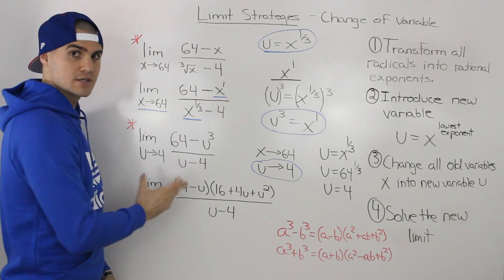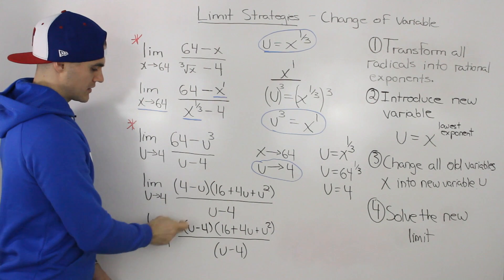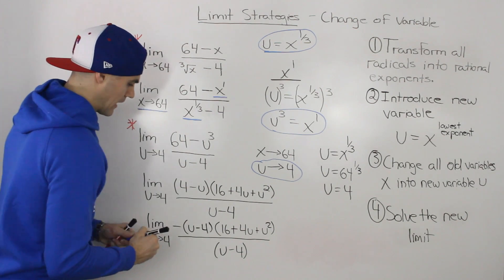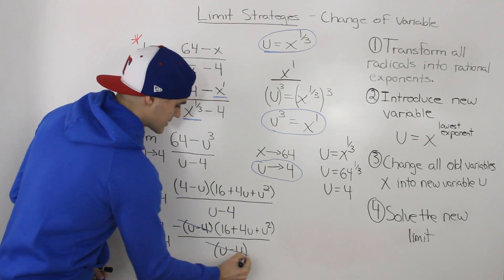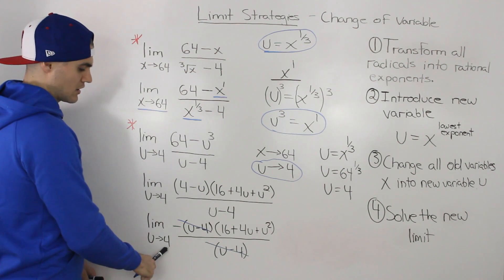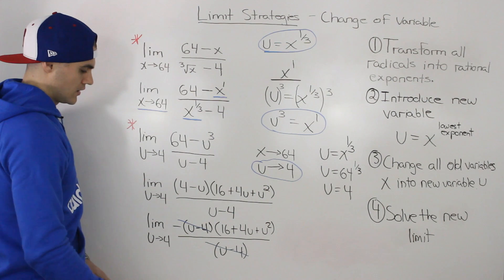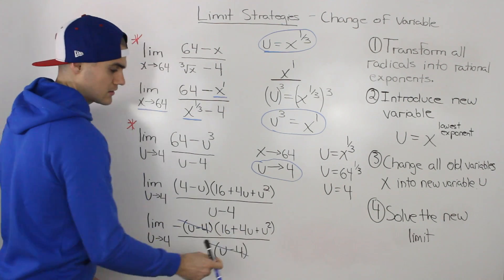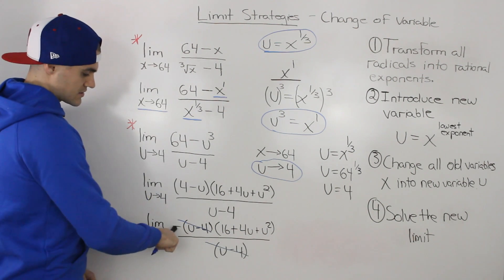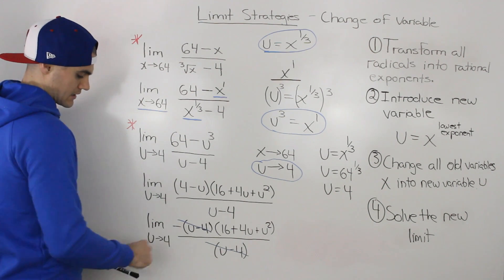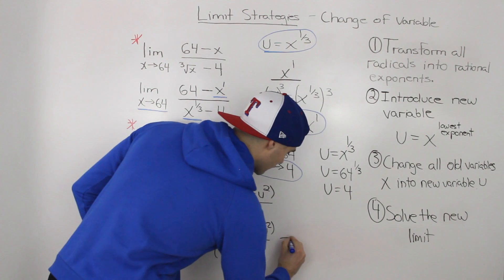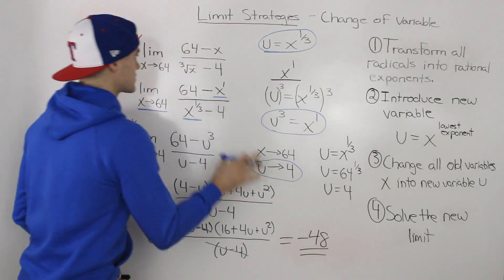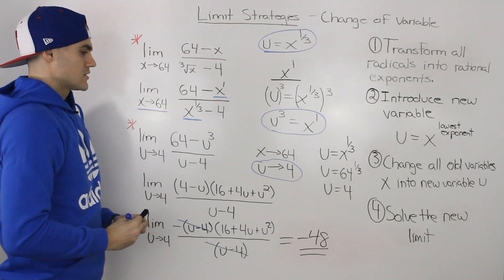We need to cancel the (u minus 4) in the denominator. The factored numerator contains (4 minus u), which isn't quite the same, but factoring out a negative gives us negative (u minus 4). The (u minus 4) terms cancel, and we can now substitute u = 4 directly. Substituting into the remaining bracket gives 16 + 16 + 16 = 48, but with the negative out front, our final answer is negative 48.